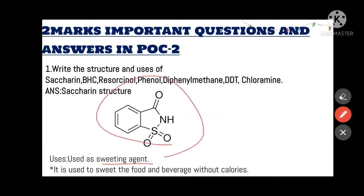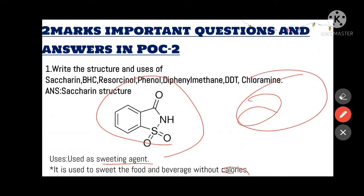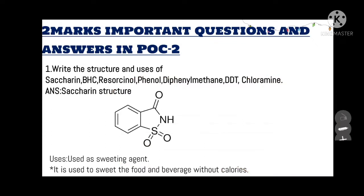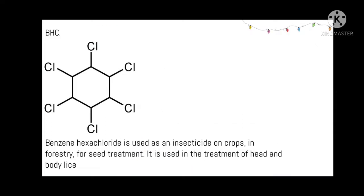Saccharine is a sweetening agent. It is used to treat food and beverages without calories — zero percent calories. We can give sweetness to food and beverages without any calories.